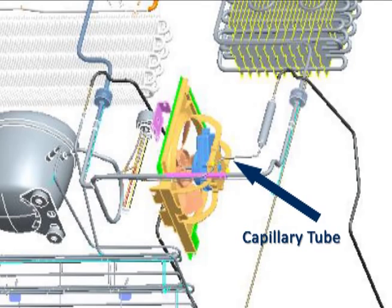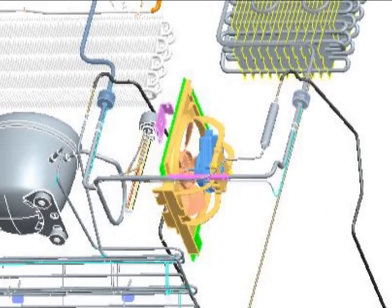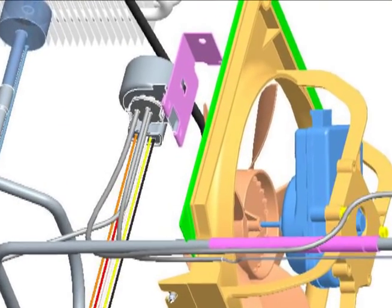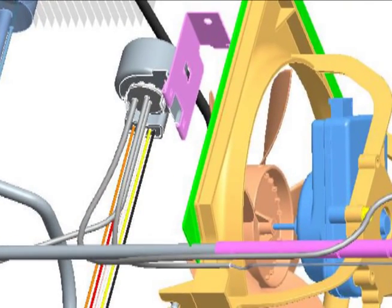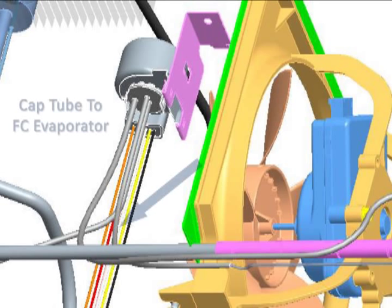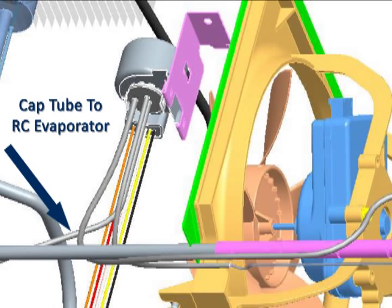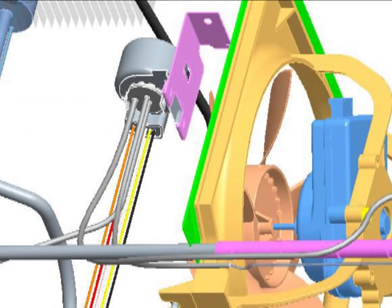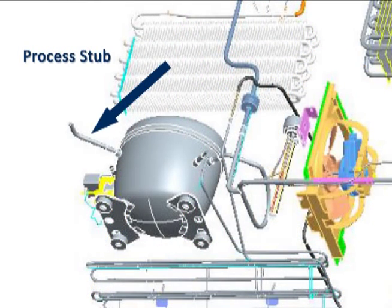The cap tube connects the filter dryer to the inlet of the three-way rotary valve, which directs the refrigerant flow. There are two cap tube outputs from the valve — one connected to the inlet of the freezer evaporator and the other to the inlet of the refrigerator evaporator. The outlet tubes from the refrigerator and freezer evaporators merge into one suction line that connects to the compressor. The process stub on the compressor is used for servicing.